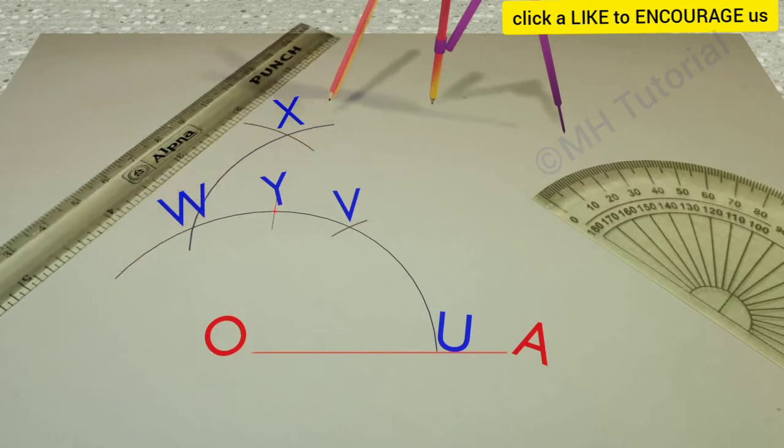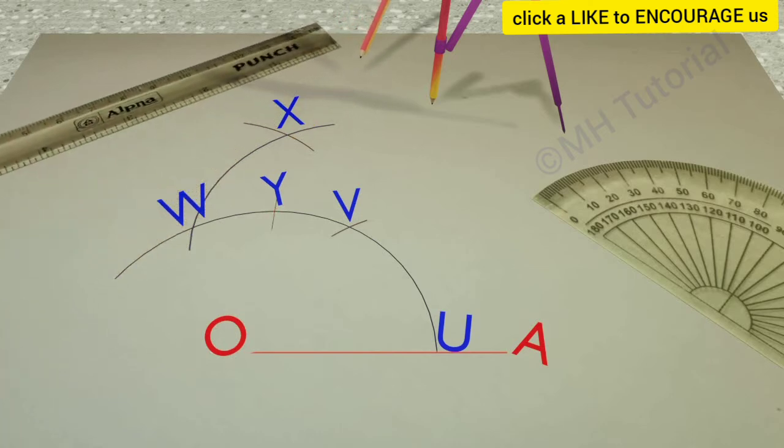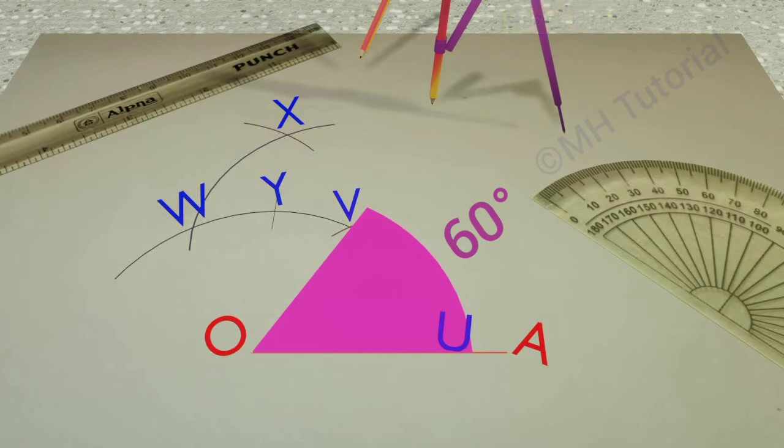Now if we connect point O and point V, then a 60 degree angle will be created. And if we join O and Y, it will produce a 90 degree angle.